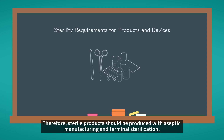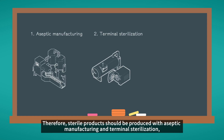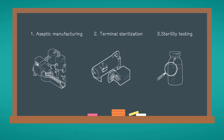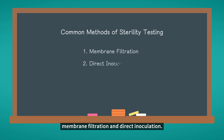Therefore, sterile products should be produced with aseptic manufacturing and terminal sterilization, followed by sterility testing to ensure that no viable microorganisms are present in the product. Common sterility testing methods are membrane filtration and direct inoculation.